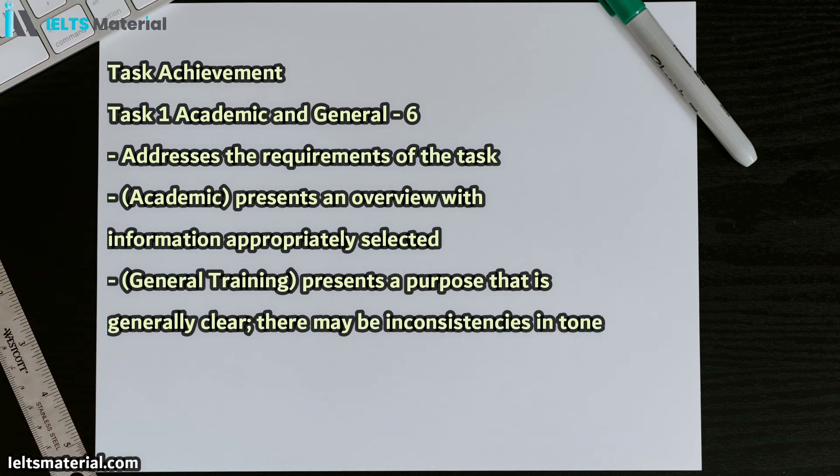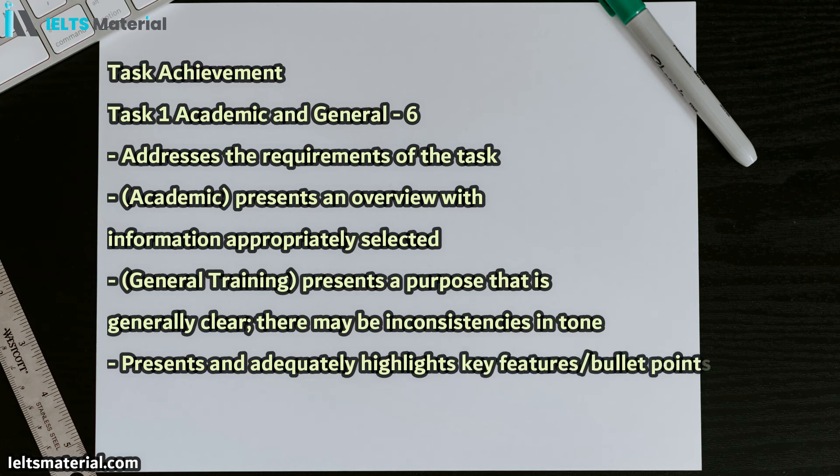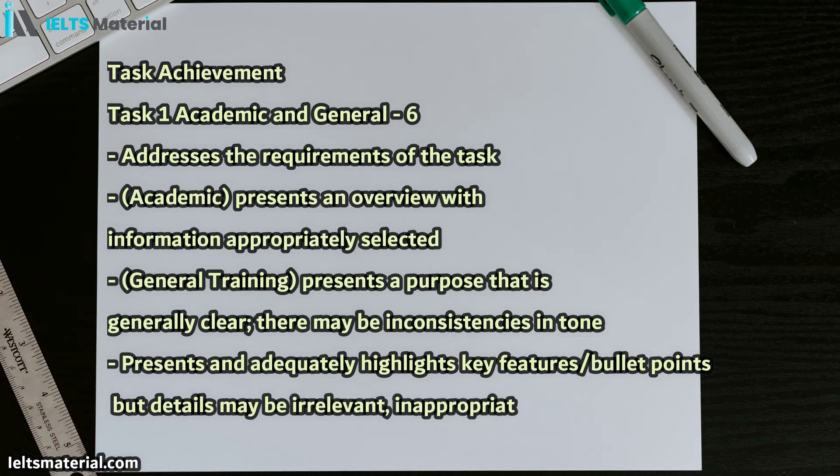For the general training that's a little different, it presents a purpose that is generally clear. They may be inconsistencies in tone. This comes back to the formal and informal and the choice of words you use, but again, this is specific to the general training letter. And for both, you present and adequately highlight key features and bullet points, but there may be some irrelevant or inappropriate or inaccurate information. So that's what you can expect for the Task 1 Academic and General Task Achievement.